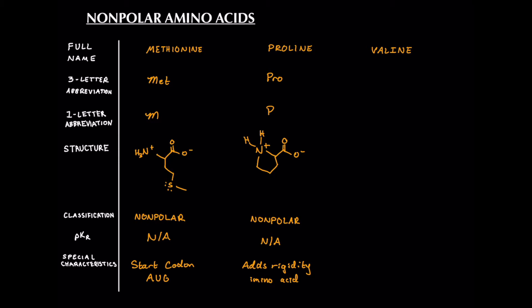Now let's look at valine. Valine's three-letter abbreviation is VAL, its one-letter abbreviation is V, and its structure is similarly a V — we can draw it upside down, with one, two, three carbons in that upside-down V shape. Its classification is nonpolar, as it is only hydrogens and carbons. Its PKR is non-existent because there is no acidic hydrogen. Special characteristics are not within the scope of the MCAT.